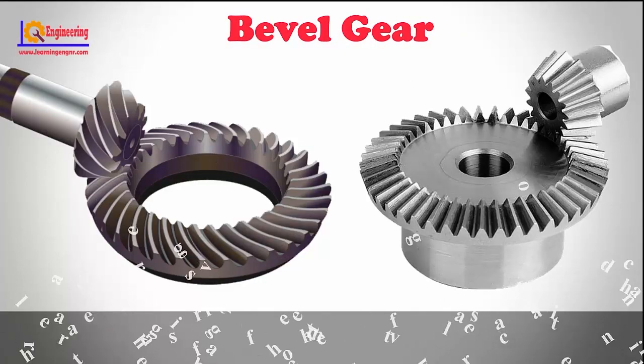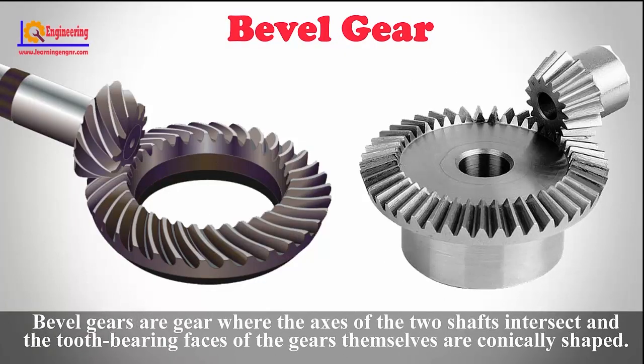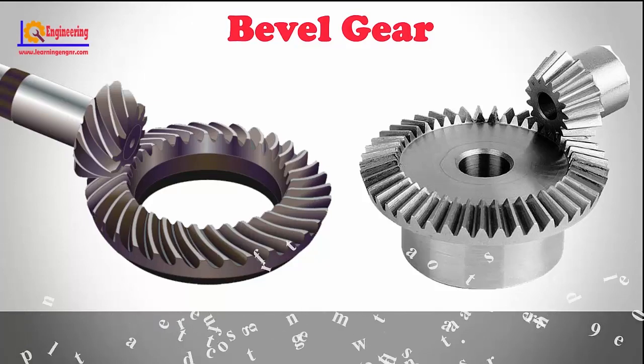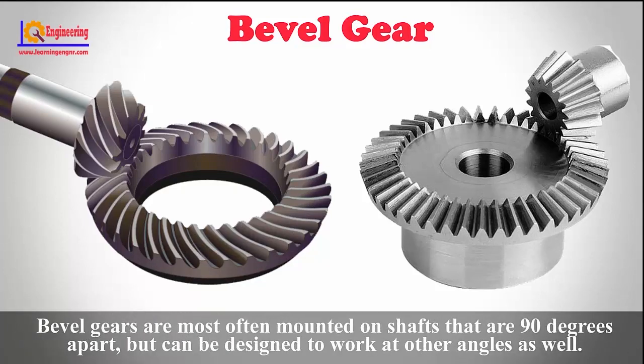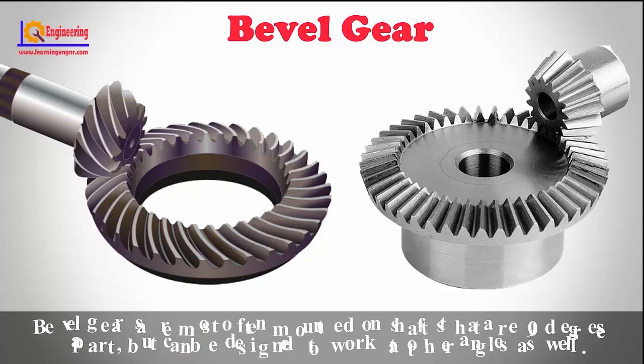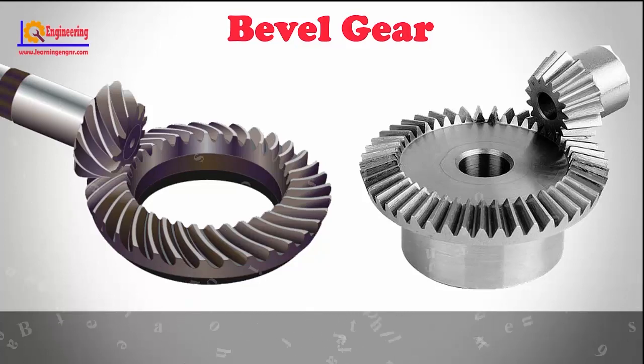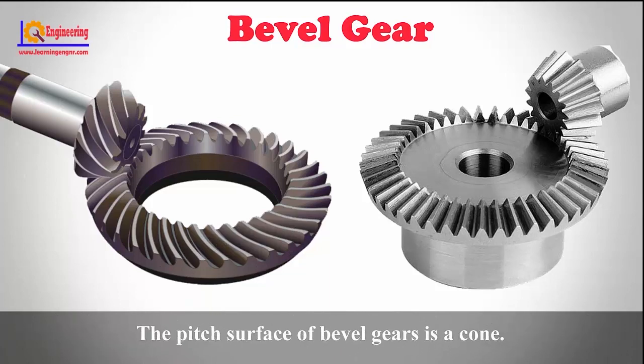Bevel gears are gears where the axes of the two shafts intersect and the tooth-bearing faces of the gears themselves are conically shaped. Bevel gears are most often mounted on shafts that are 90 degrees apart, but can be designed to work at other angles as well. The pitch surface of bevel gears is a cone.